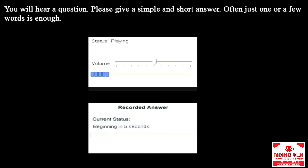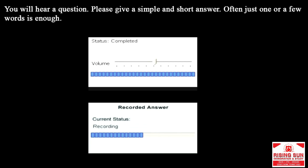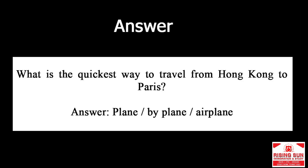What is the quickest way to travel from Hong Kong to Paris? Answer: plane, biplane, airplane.